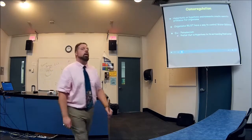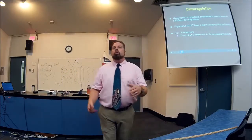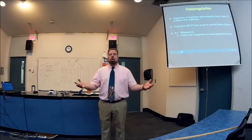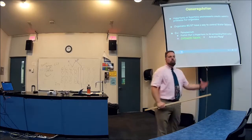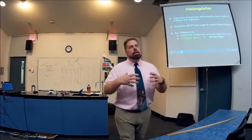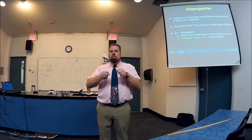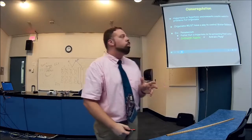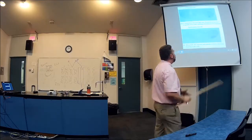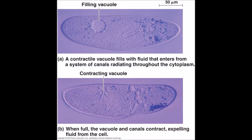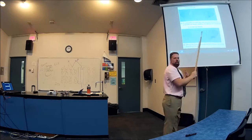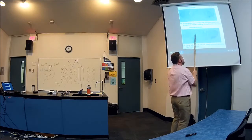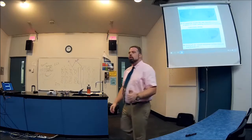So the paramecium has a problem — if water's coming in, it needs to get rid of that water before it bursts. Well, it adapted and evolved: it has something called a contractile vacuole. As water comes in, this vacuole is a pump — it takes in water and pumps it right out. The vacuole fills up, shoots it all out, and becomes small again.